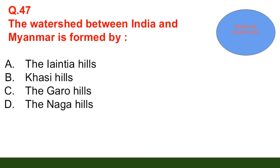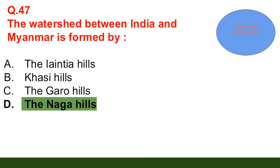Question number 47: The watershed between India and Myanmar is formed by — option A: Delantia Hills; option B: Khasi Hills; option C: Garo Hills; option D: Naga Hills. The correct answer is option D — Naga Hills.